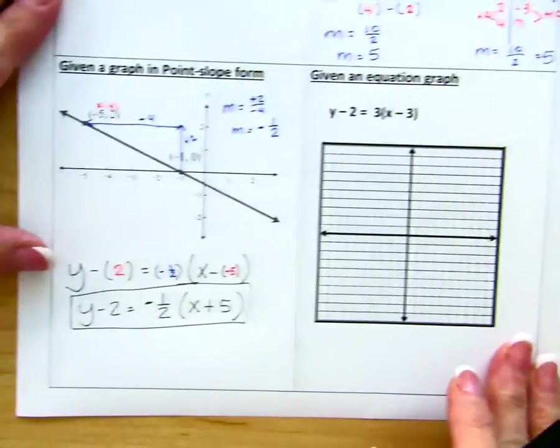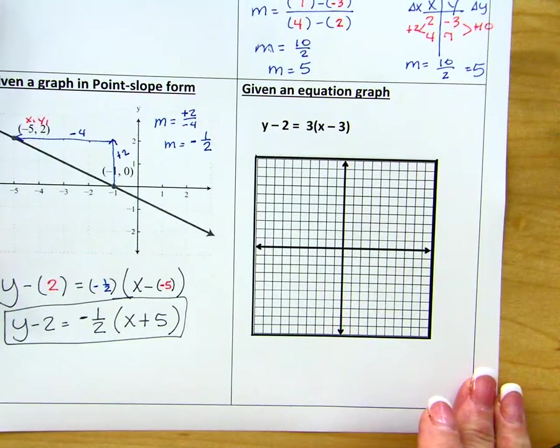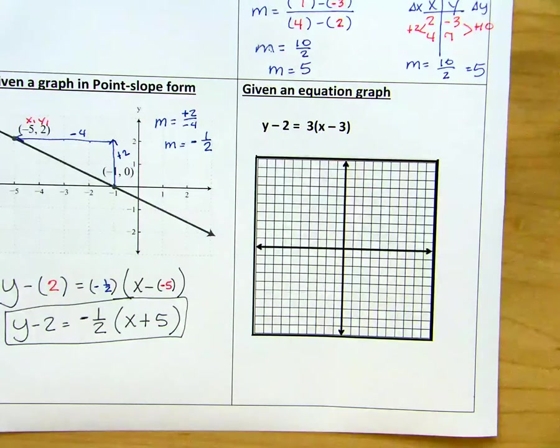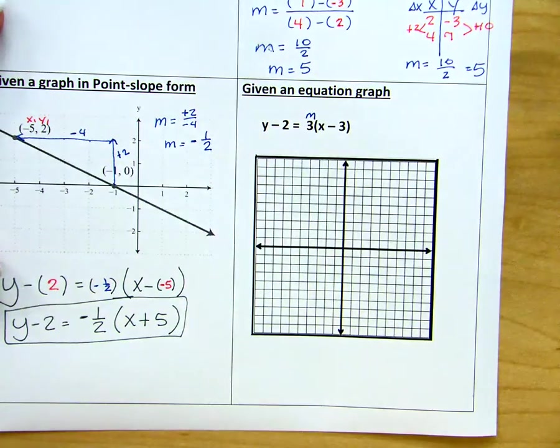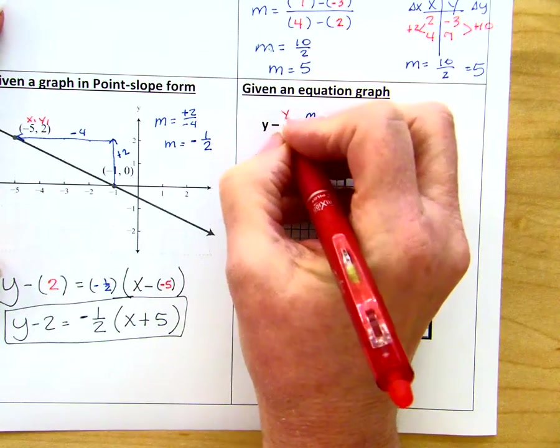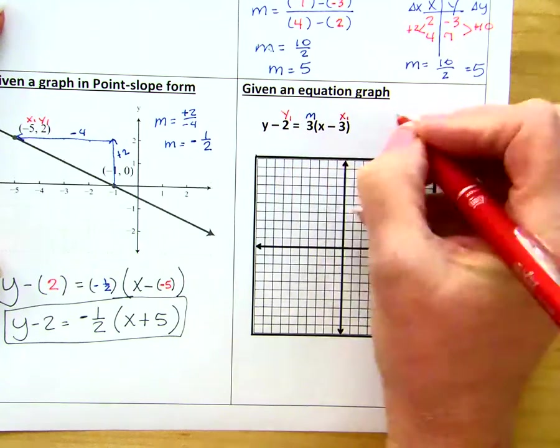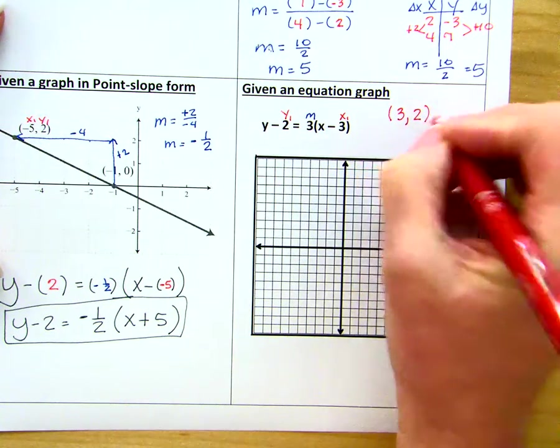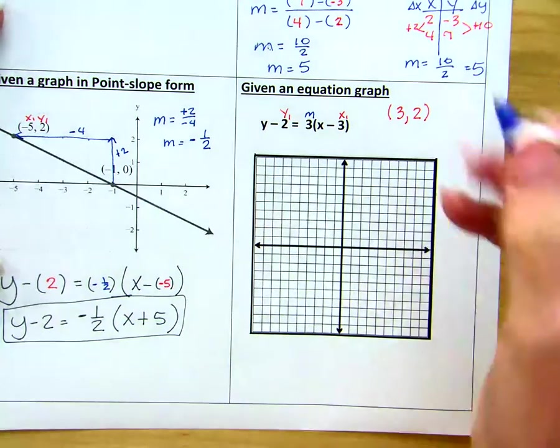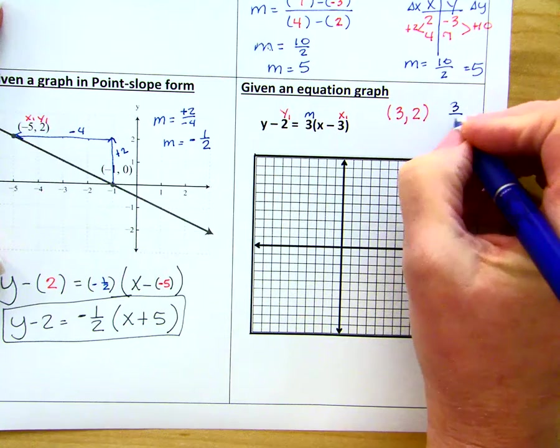So our last example is when we're given an equation and they want us to graph it. So we need to pull out our point and our slope from the equation. So here is m. Here is y sub 1. Here is x sub 1. So my point is a positive 3, positive 2. And my slope is going to be 3 over 1.